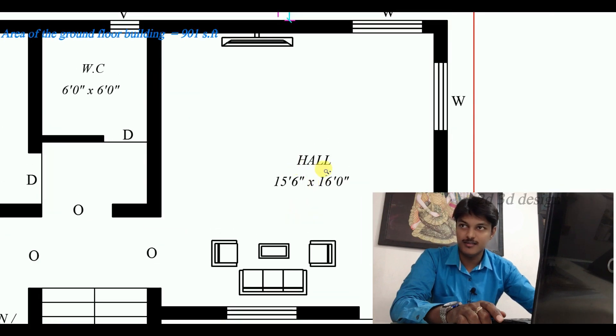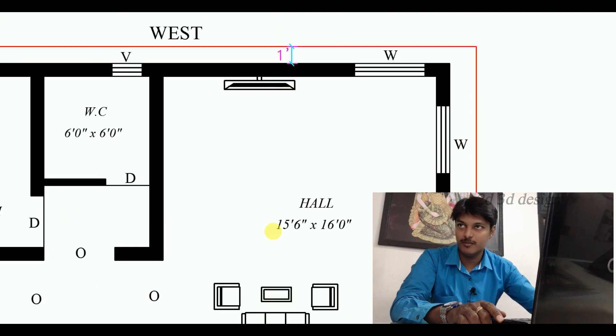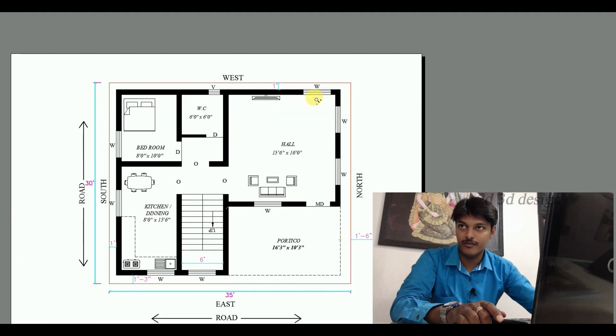This is the hall. The hall size is 15 feet 6 inches into 16 feet. This is the sofa. This is the TV unit. This is the four windows.